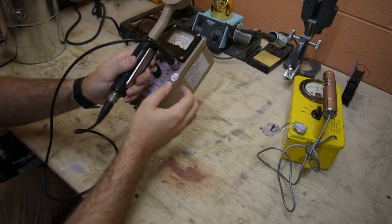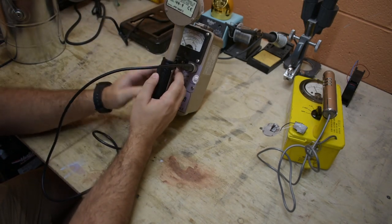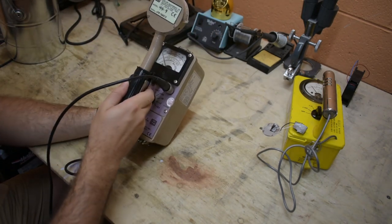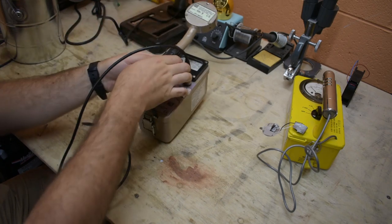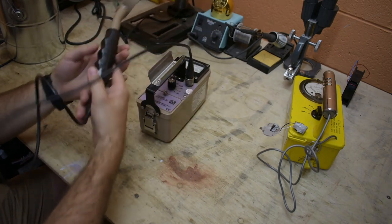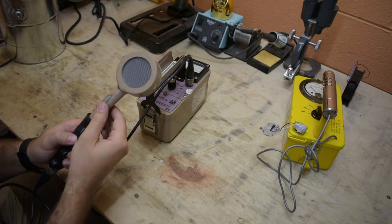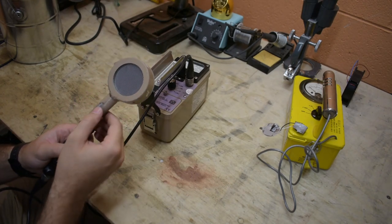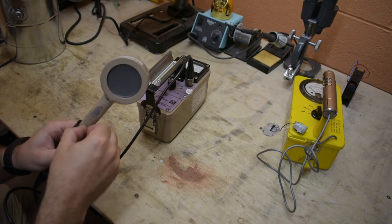It's a Ludlum Model 3. It's also a Geiger probe. This one has what's called a pancake Geiger probe and it's a little bit more sensitive. It has a larger area and also it has a thin window that lets alpha radiation through.